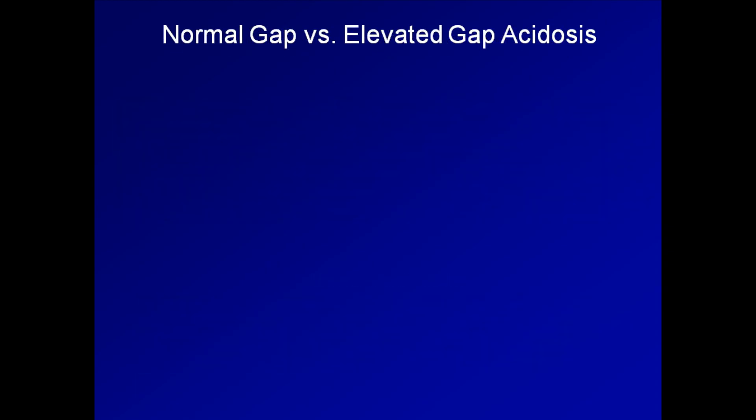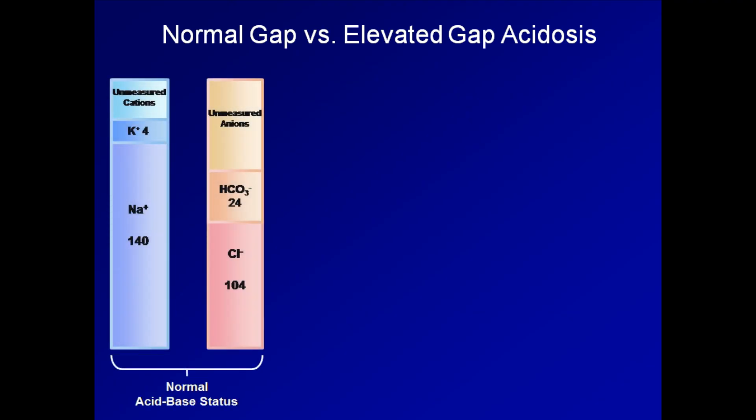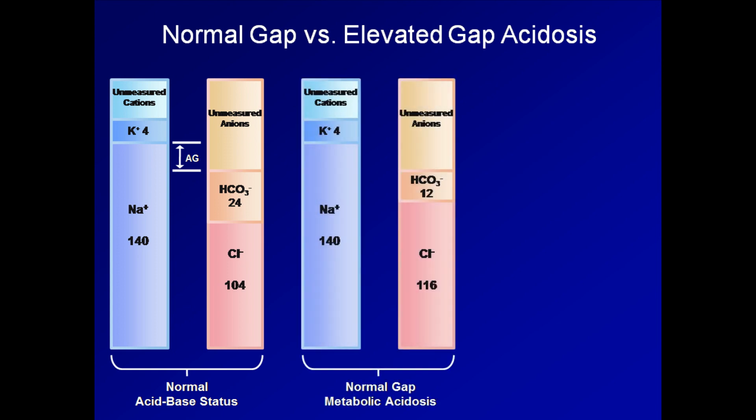Let's see a graphical representation of the electrolyte differences in normal gap and elevated gap metabolic acidosis. First, here is our normal acid-base status with some normal values of commonly measured cations and anions. This demonstrates a normal anion gap of 12, which is 140 minus 24 minus 104. In a normal gap metabolic acidosis, bicarbonate concentration is decreased and chloride is increased in roughly a 1 to 1 ratio. This can be seen with either loss of bicarbonate or decreased excretion of acid by the kidneys. As you can see, there is no change in the value of the sodium minus bicarb minus chloride. Thus, the anion gap is unchanged.